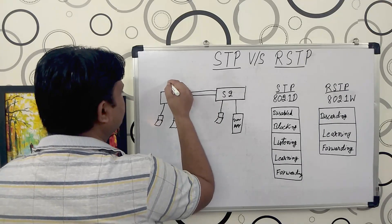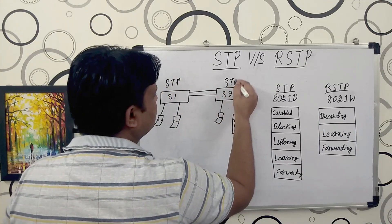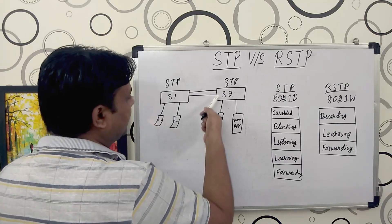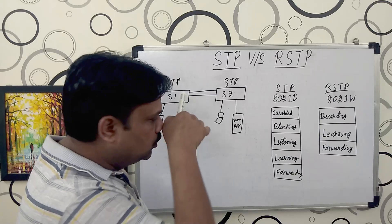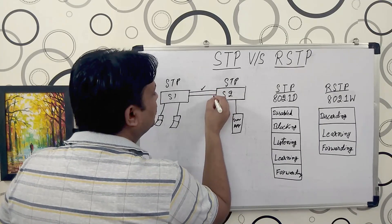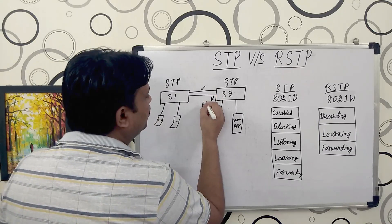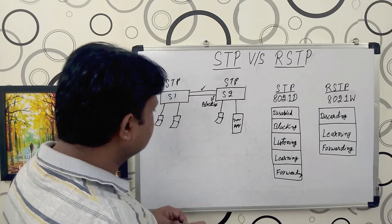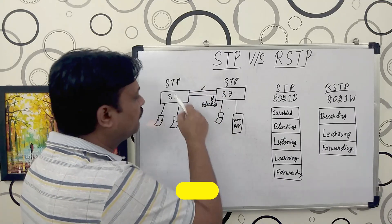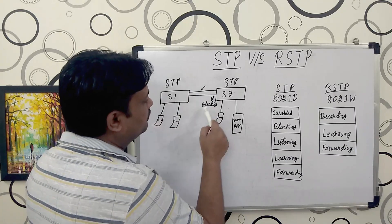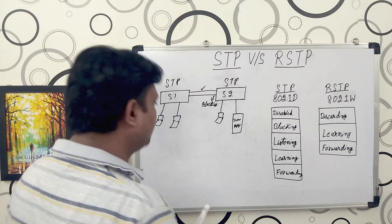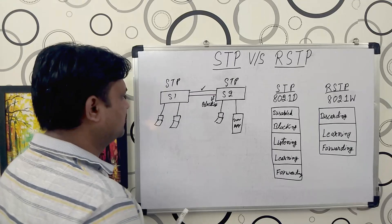Say Switch Number One and Switch Number Two are both configured with STP protocol. What STP will do the moment I connect the second link is analyze the network between the two switches. It will allow one link to transfer data and put another port into a blocking stage. It puts a port into blocking stage to avoid a loop — without blocking, a loop would be created. Based on certain parameters, STP analyzes which port to block.